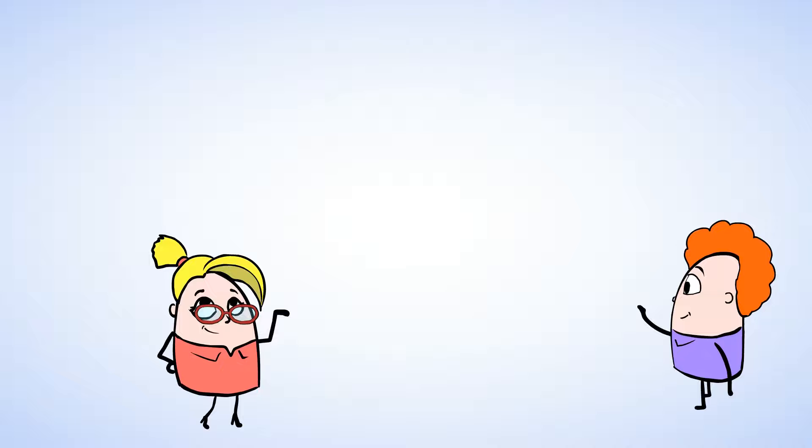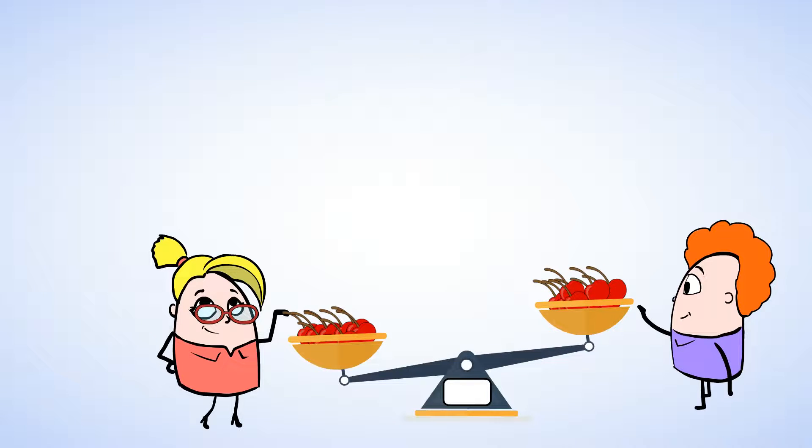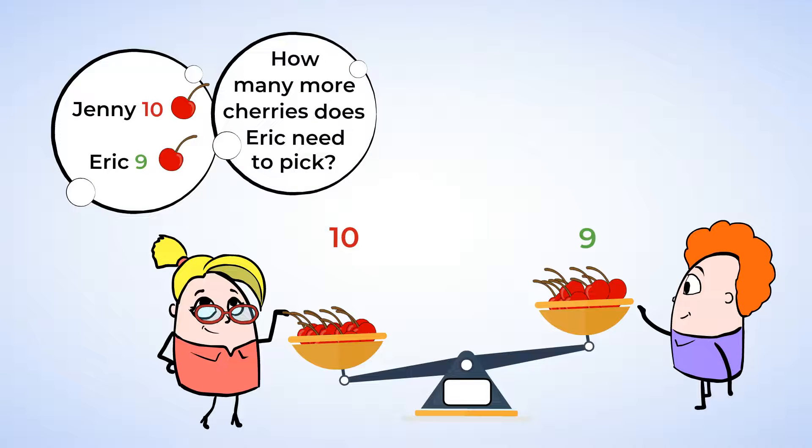Oh, it's Jenny and Eric. And they're picking cherries. Jenny picks ten cherries. And Eric picks nine cherries. Now they want to have an equal number of cherries. So how many more cherries does Eric need to pick? We know that nine cherries is less than ten cherries. So we need to add some more to the right side. Ten equals nine plus what number?